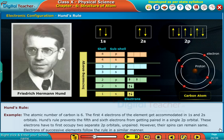Example. The atomic number of carbon is six. The first four electrons of the element get accommodated in 1s and 2s orbitals.